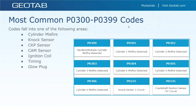Codes between P0300 and P0399 are ignition system and misfire codes. If there is a bad spark plug or a faulty coil, you would usually see a code set within this range. There are also other items that fall within this range as well.